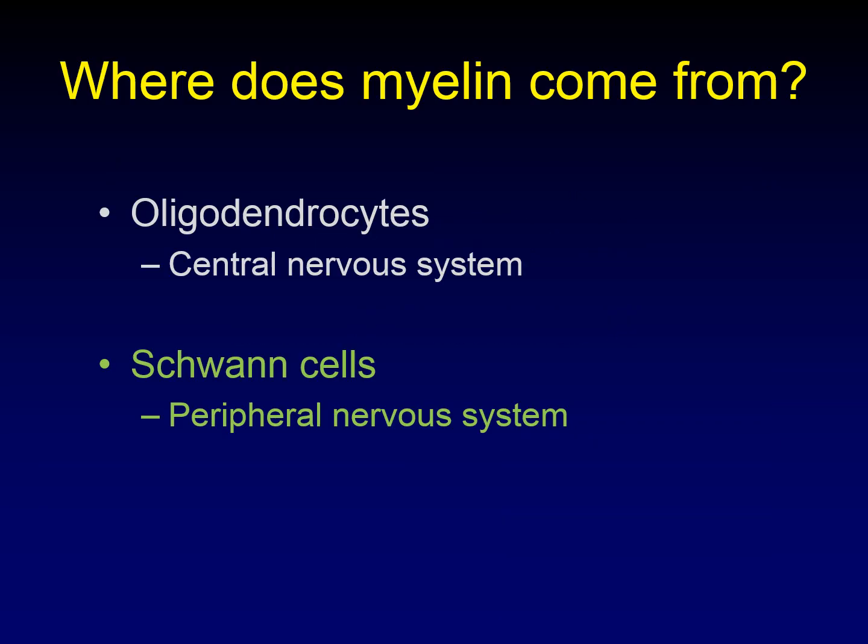To understand microvascular compression, you first need to understand where myelin comes from. Myelin is produced by oligodendrocytes in the central nervous system, and it's produced by Schwann cells in the peripheral nervous system.